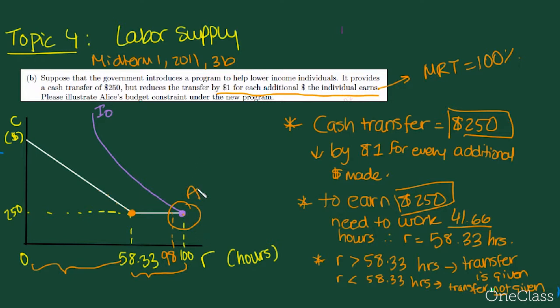That means that we have a corner solution at A because Alice's utility is maximized here. If you want to find the point of tangency between Alice's utility, which is some utility function I drew at I0, you can just shift I0 backwards, and you can see that it's not even optimal. It goes through her budget constraint. So the best thing for Alice to do is consume at R equals 100 and get the cash transfer of $250. And this is exactly how her budget constraint would look like.